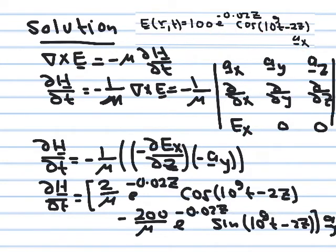It's a function of z and time, but here we differentiate only relative to space. The only non-zero component in the curl expansion comes from canceling the appropriate column and row, giving negative partial E_x partial z in the a_y direction. There is a negative sign from a_y and a negative sign from minus partial E_x partial z. When you differentiate E_x relative to z, you have two terms because both e^(−0.02z) and cosine(10^9 t minus 2z) are functions of z.